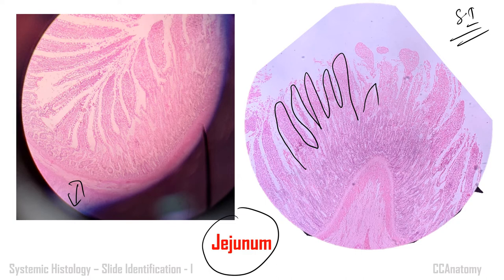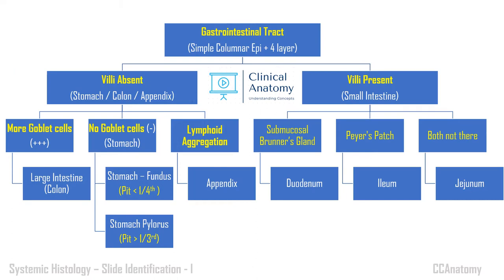To summarize: for small intestine — duodenum has Brunner's glands, ileum has lymphoid follicles (Peyer's patches), and jejunum has neither. Go through the chart so you can identify almost all GI tract slides. I say 'almost all' because there are a few exceptions we'll see in the upcoming slides.